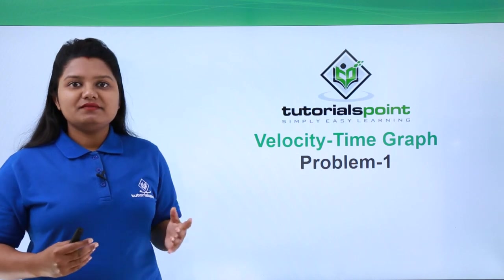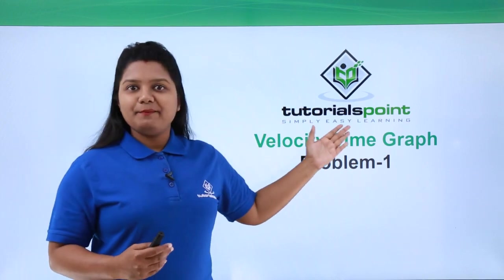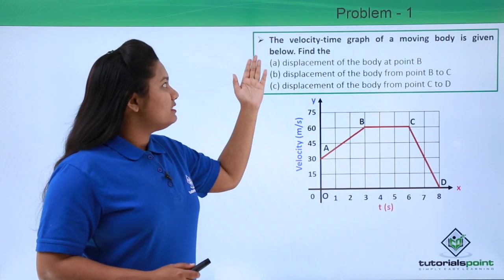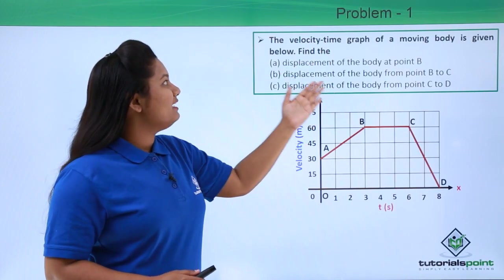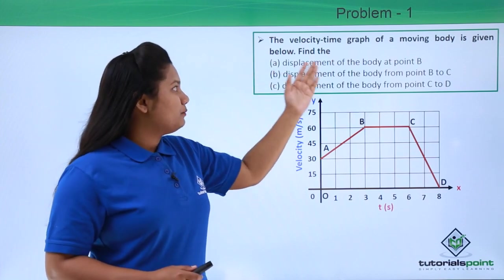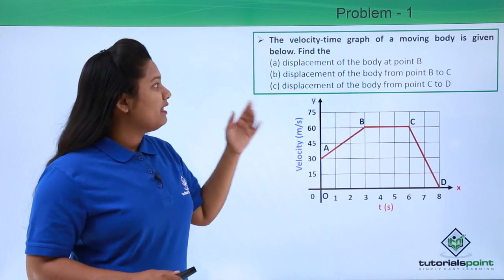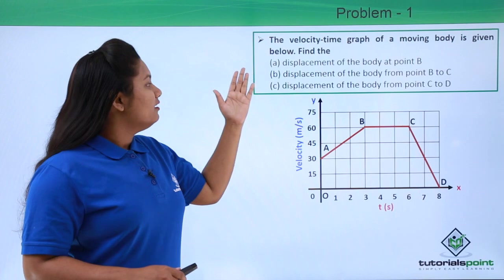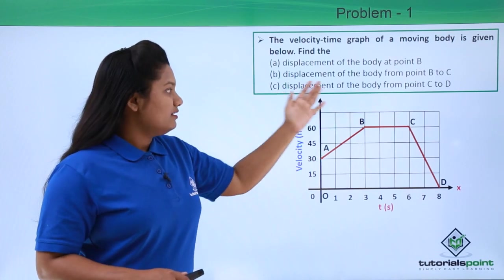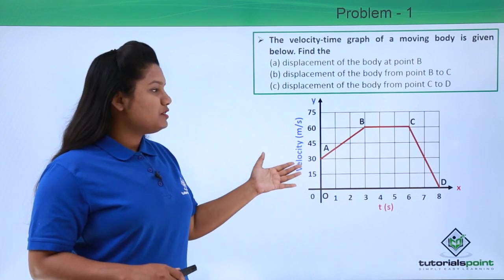Hello everyone. In this video we'll be looking at a problem based on a velocity-time graph. The problem reads: the velocity-time graph of a moving body is given below. Find the displacement of the body at point B, the displacement from point B to C, and the displacement from point C to D.